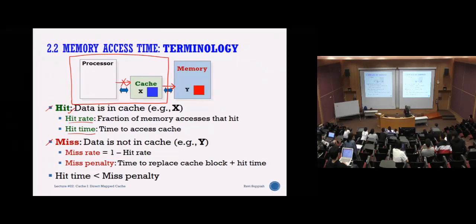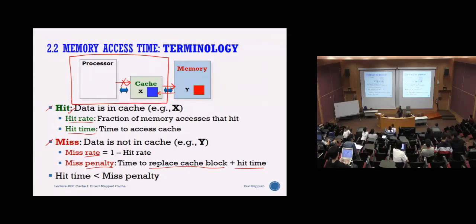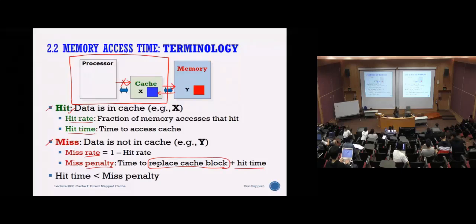When you read from memory on a miss, you must also update your cache. For a miss, there is a miss rate and a miss penalty. Miss penalty is the time to replace the cache block plus the hit time. Regardless of whether you hit or miss, you still factor in the hit time because you need to access the cache first to know whether the data is there. If it's not there, you add the additional time to access memory and replace the cache block with new data.